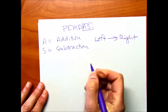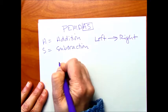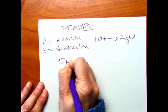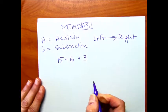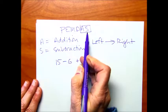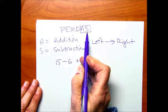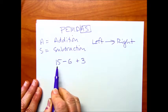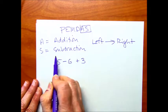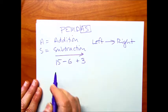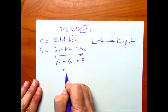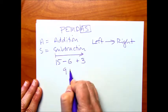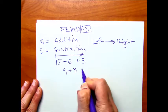So here are some examples. Let's say we have 15 minus 6 plus 3. You might think, well, subtraction is last. But because it's just add and subtract, I'm going to go left to right. So we start here at the 15. We're going to subtract 6. That's going to give us 9. Then we're going to add the 3, 12.